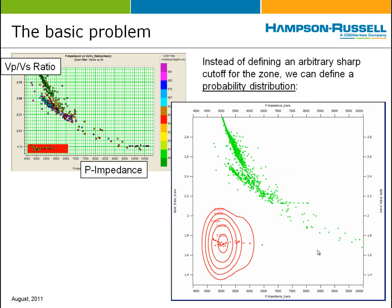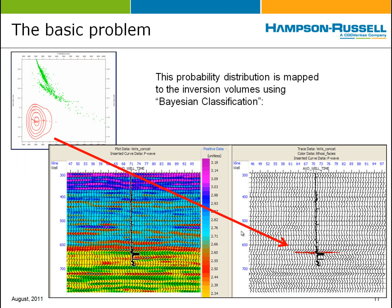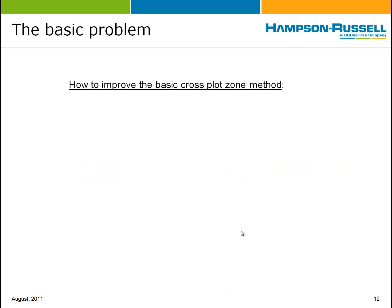An alternative to defining an arbitrary sharp cutoff for the zone is to define a probability distribution. Instead of the arbitrary zone, we have a probability distribution. We could think of the zone as a type of distribution in which the probability of being a gas sand anywhere within the rectangle is 1, or certainty, and it drops to precisely zero right on the edge — that's where the arbitrariness is. Instead, the probability distribution is a mathematical function which has a maximum centered within the cluster of points and falls off gradually as we head farther away. That probability distribution can still be mapped to the inversion volume using something called Bayesian classification.